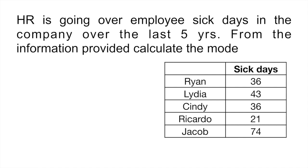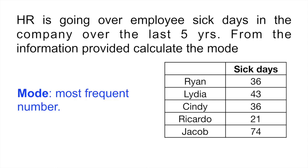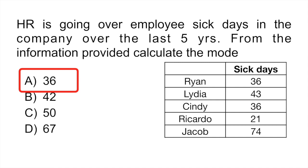They're giving you a table with five employees — Ryan, Lydia, Cindy, Ricardo, and Jacob — and the number of days each has been off sick over the past five years. The question asks you to calculate the mode. The word 'calculate' might throw you off — people sometimes think it means average or mean. But the mode is the number that appears most frequently. Ryan had 36 sick days, and Cindy also had 36 sick days, so the mode is 36. The answer is A.